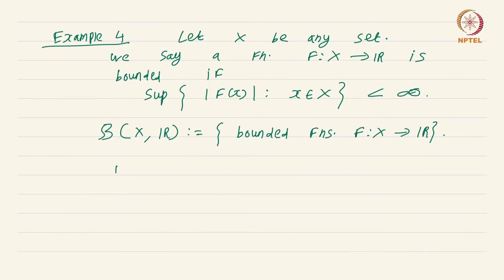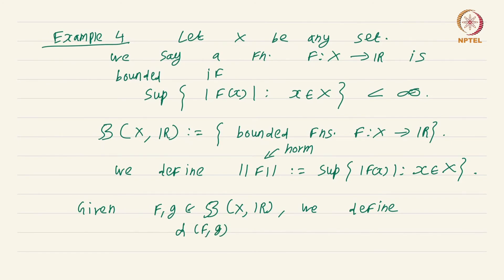We define ||f||, the norm of f, to be nothing but supremum of |f(x)| as x runs through X. This supremum will obviously exist because we are taking only bounded functions. And given f, g in this collection B(X,R), we define d(f,g) by definition to be nothing but ||f - g||. Obviously, because f and g are bounded functions, f minus g is also going to be a bounded function and this norm of f minus g makes sense.